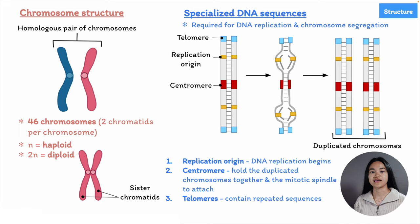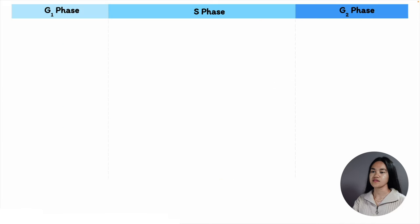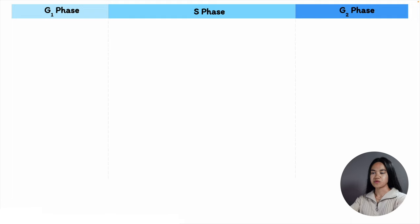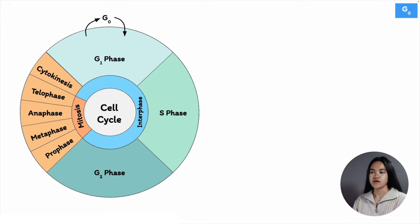Interphase is the part of the cell cycle when a cell prepares itself to duplicate and accounts for about 90% of the cycle. In this phase, the cell grows and replicates its genetic material. We can divide interphase into three stages: the G1 phase, also known as gap 1; the S phase, which is the synthesis part; and the G2 phase, gap 2. There's also another phase called G0, which is a non-dividing state or resting period. This is where a cell will leave the cycle and temporarily stop dividing, or it can be a permanent state for some cells.